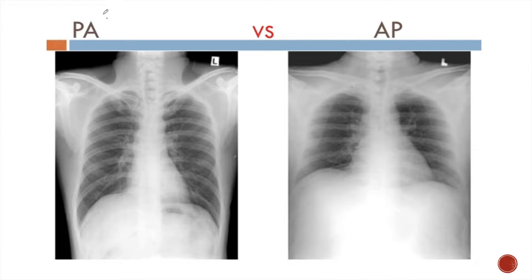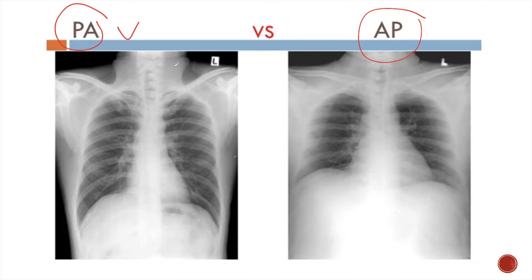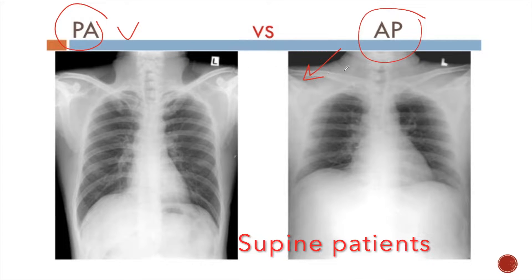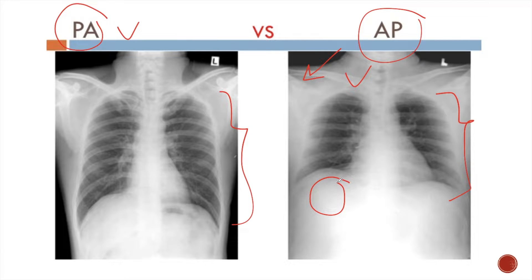The next step is to identify the difference between the posterior-anterior view and the anterior-posterior view. PA is the standard view and is done in day-to-day practice. For a PA view, patients should be able to stand up. AP view is done for supine or bedridden patients. In the anterior-posterior view, the lung fields appear smaller than in the posterior-anterior view, so some parts of the lung fields may be obscured. Hence, PA view is called the standard view.